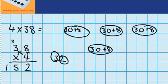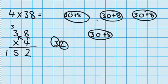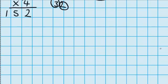So you can see in this method that I'm multiplying this number by every part of the top number, and if I've got anything left over that I've carried over, I add that on. Let's try another example.